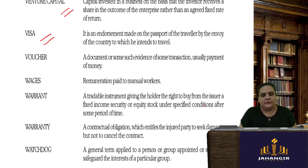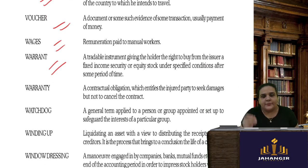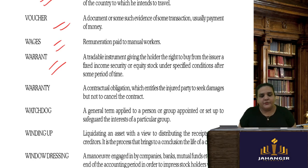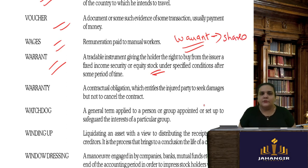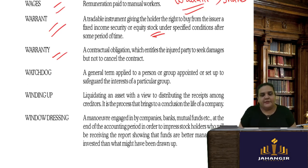A visa is required for traveling abroad. A voucher is a document or evidence of some transaction. Wages are remuneration paid to manual workers. A warrant is a tradable instrument giving the holder the right to buy from the issuer of a fixed-income security or equity stock under specified conditions — issued by a company in place of shares, giving the option that the warrant can be converted into shares at a later stage. A warranty is a contractual obligation that allows you to apply for damages if any occur.